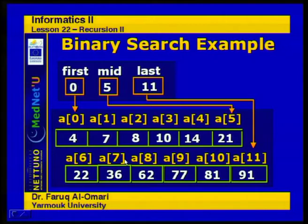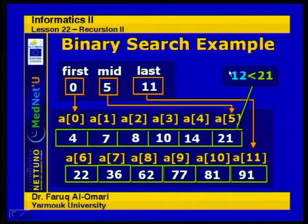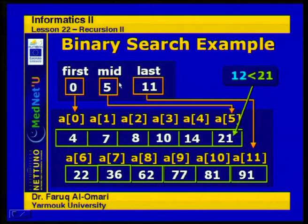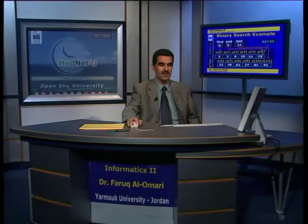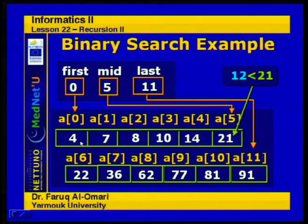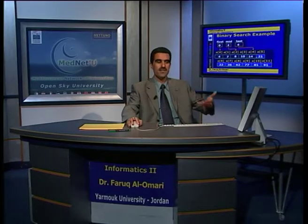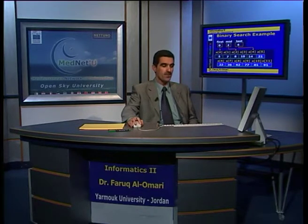Let's look at an example — the same one we covered when we first talked about binary search. We have an array with 12 entries, already ordered, and we want to find target 12. First points to the first entry, last to the last — that's the initial condition. We calculate mid as (11 + 0) / 2 = 5, go there, and compare. Target is less than 21, so we ignore that half and repeat with first and last pointing to the lower half.